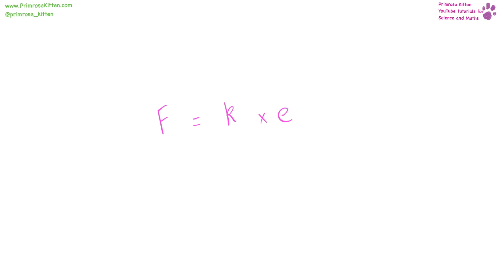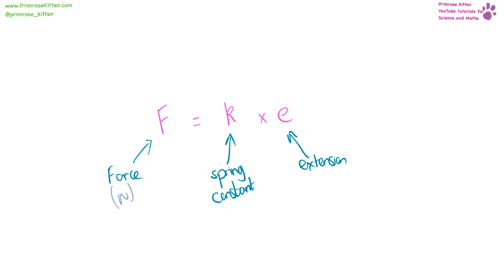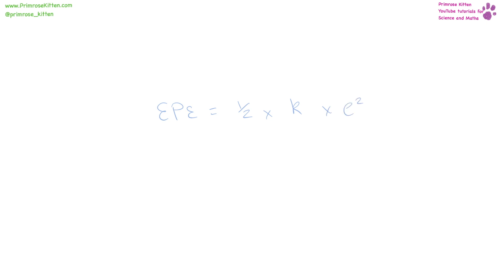Force equals the spring constant times extension. Force is measured in newtons, extension is measured in meters, and the spring constant is measured in newtons per meter. Elastic potential energy is equal to half times the spring constant times extension squared. Elastic potential energy is measured in joules. Half is just a number. Spring constant is measured in newtons per meter and extension is measured in meters.